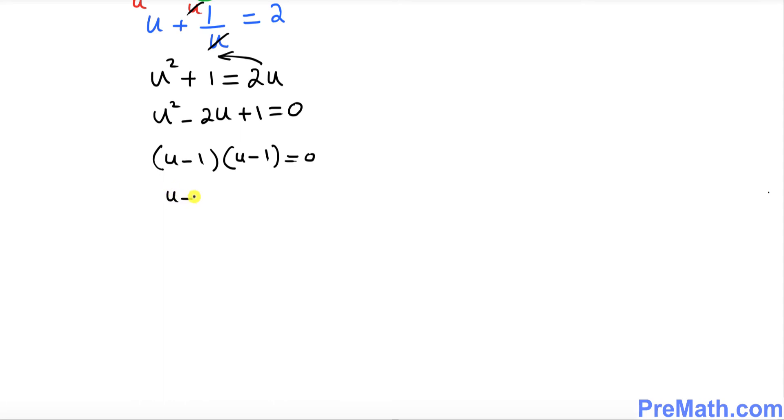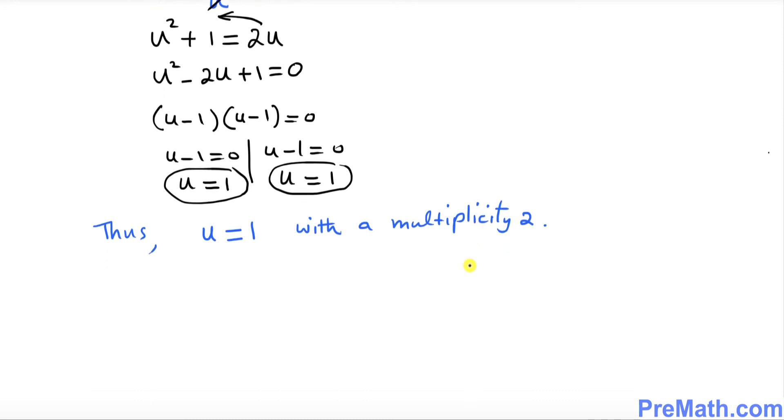So that means u minus 1 equal to 0. If you split them up, in either case we got u equals to 1. So that really means our solution is u equals to 1 with a multiplicity 2. That means this is showing up twice, that's what this multiplicity means.